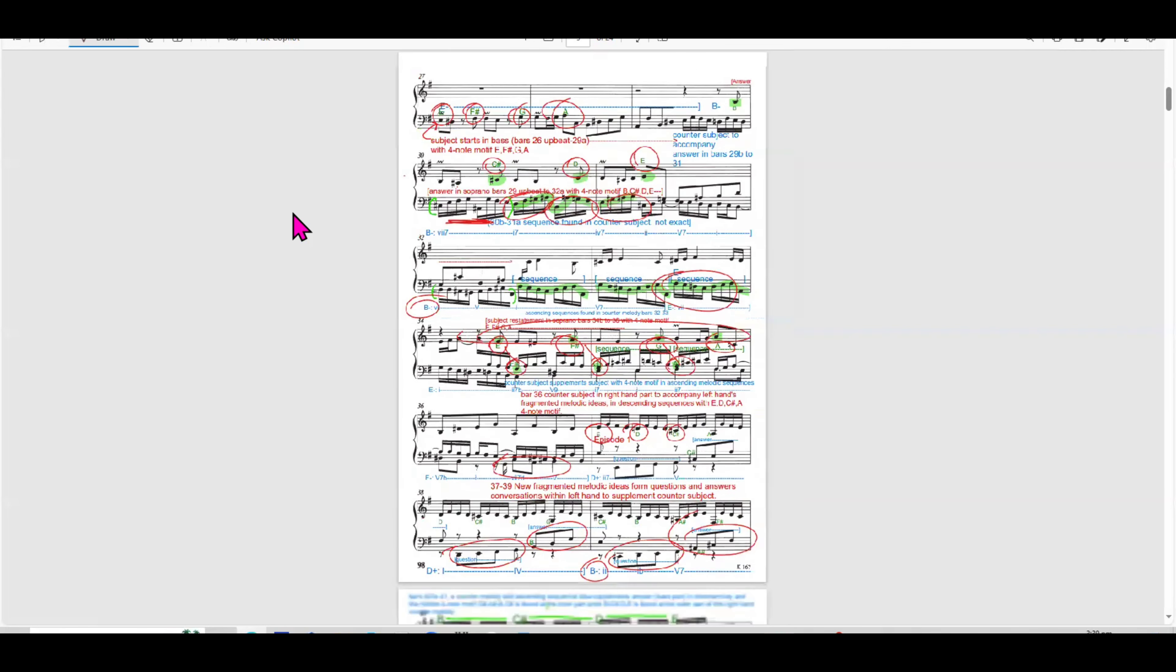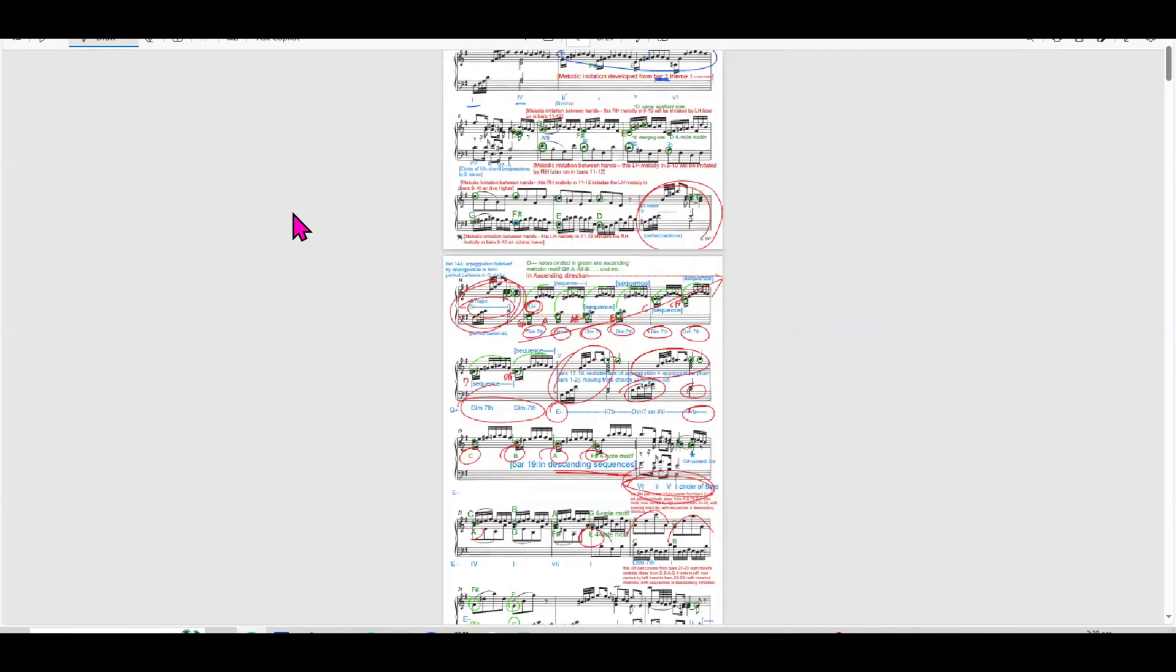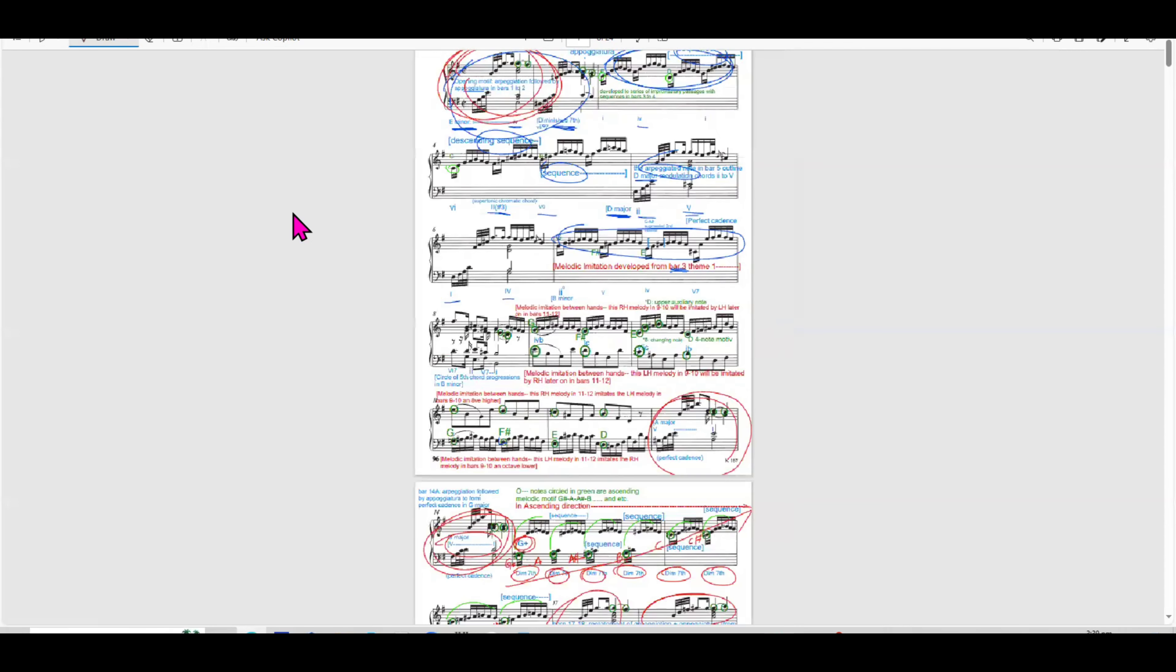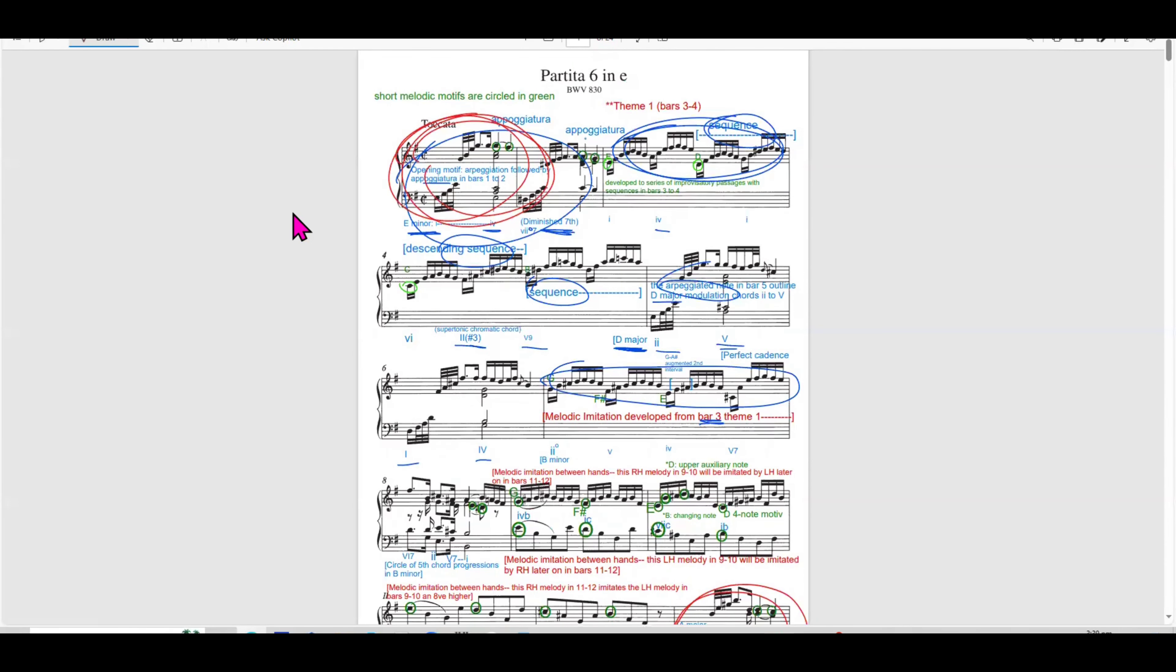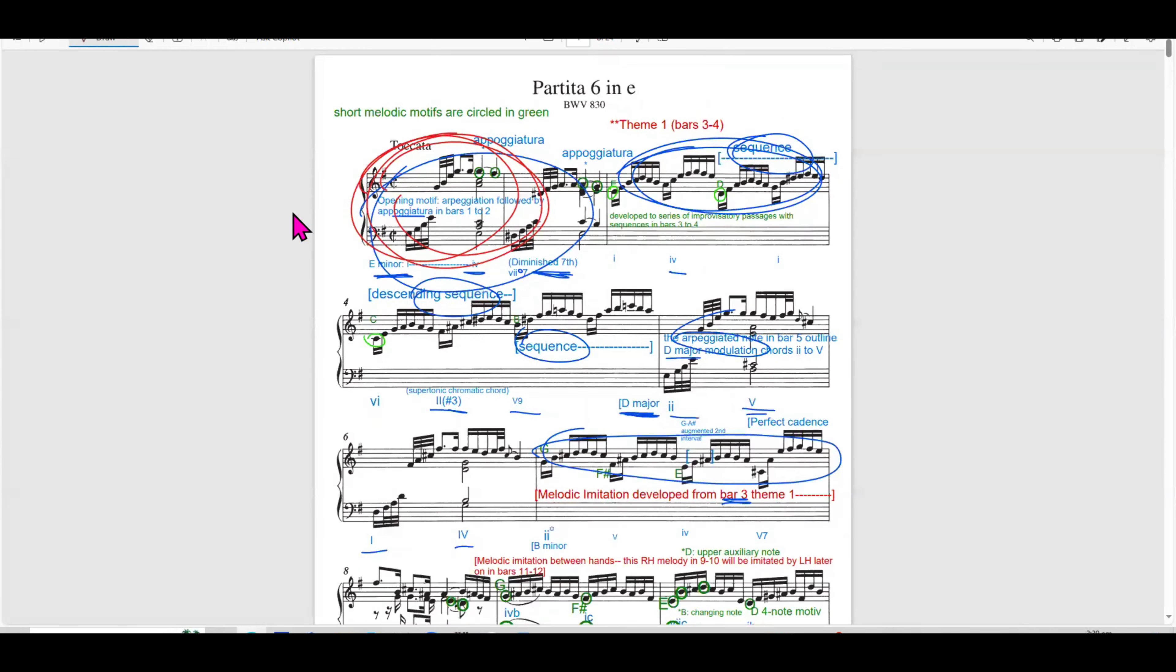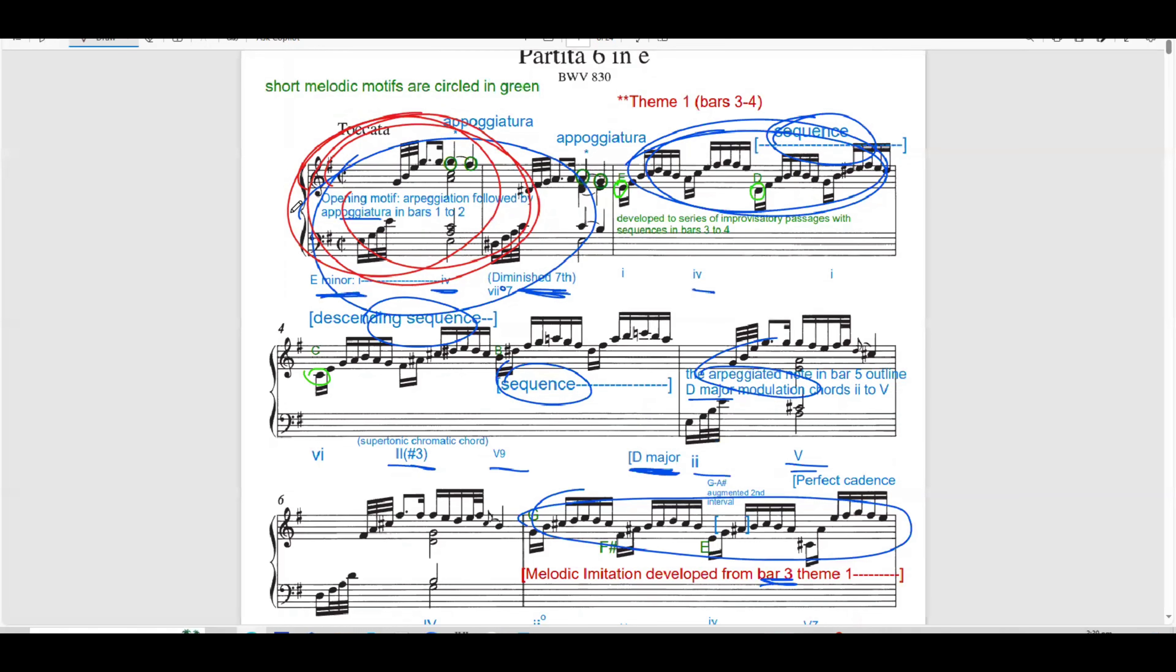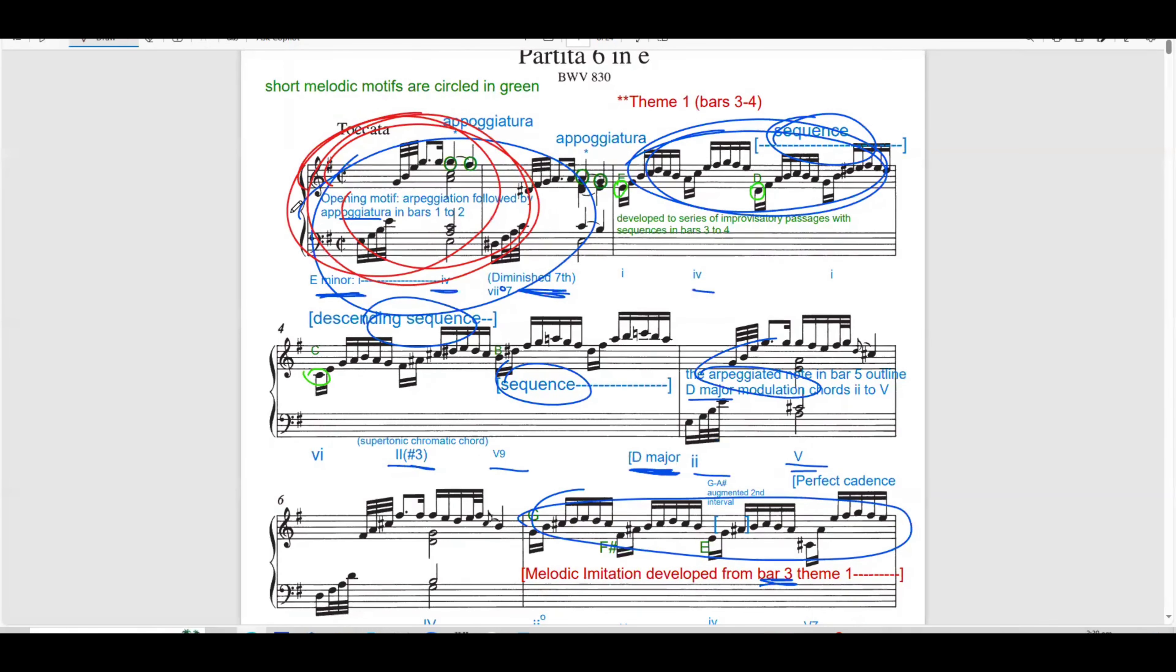The four note motif E F sharp G A returns bringing familiarity and thematic unity to the piece. The counter subject once again accompanies the subject this time in ascending sequences that provide harmonic support and increase the polyphonic texture. The polyphonic writing in the ascending sequence in the counter subject create a dialogue with a soprano voice which is here.